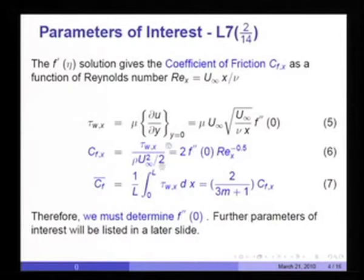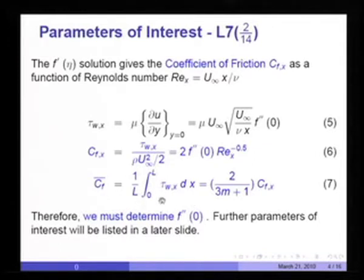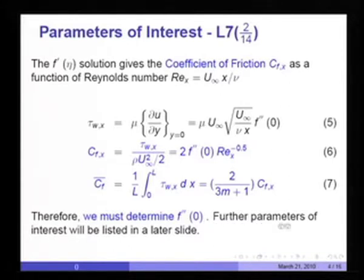The local skin friction coefficient is defined as that. So once we solve the problem, we can determine f''(0). It is also of interest to find the average skin friction coefficient over length L by integrating τ_wall from 0 to L and dividing by L. Therefore we must determine f''(0), for which we have no boundary condition at the moment.